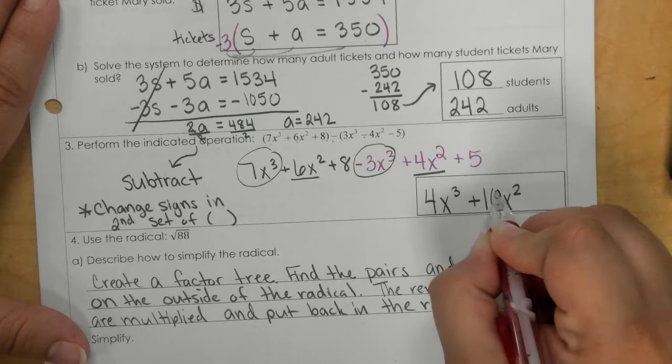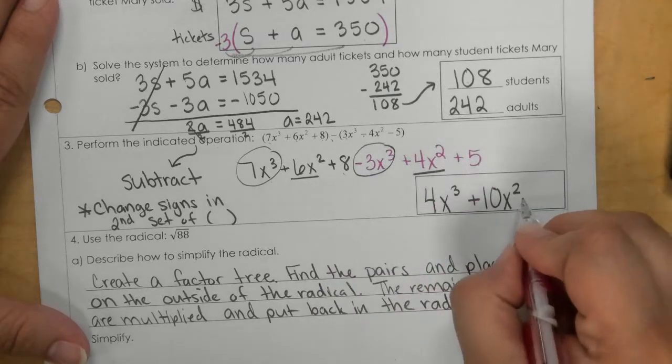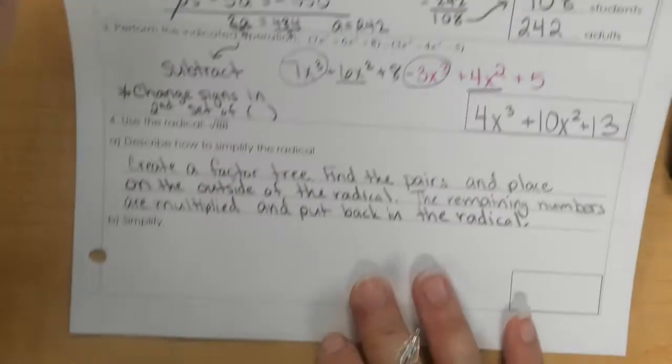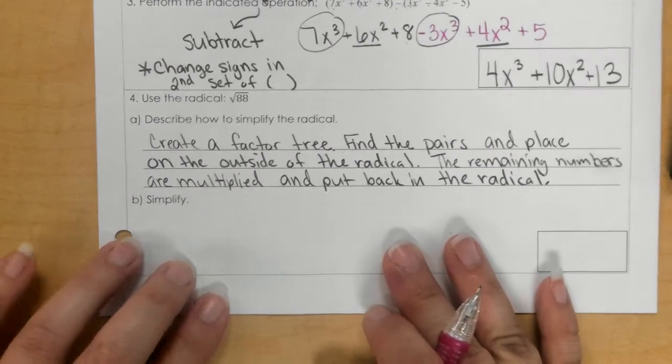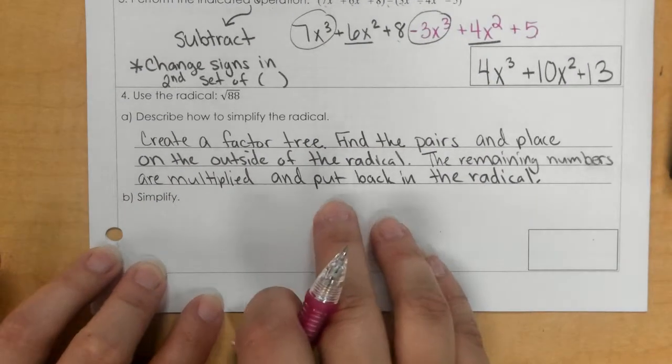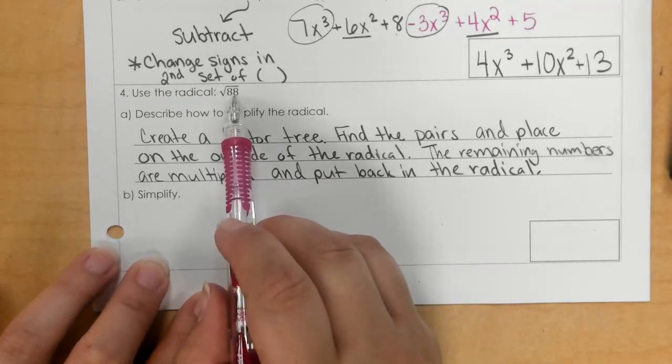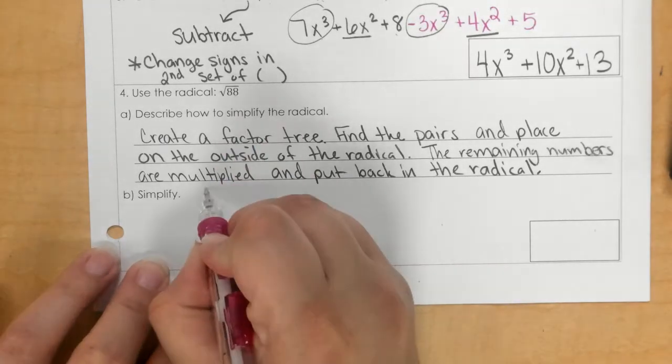Then for the bottom one here, number 4, I went ahead and wrote out the explanation. To simplify a radical, I would start with doing the factor tree for 88.